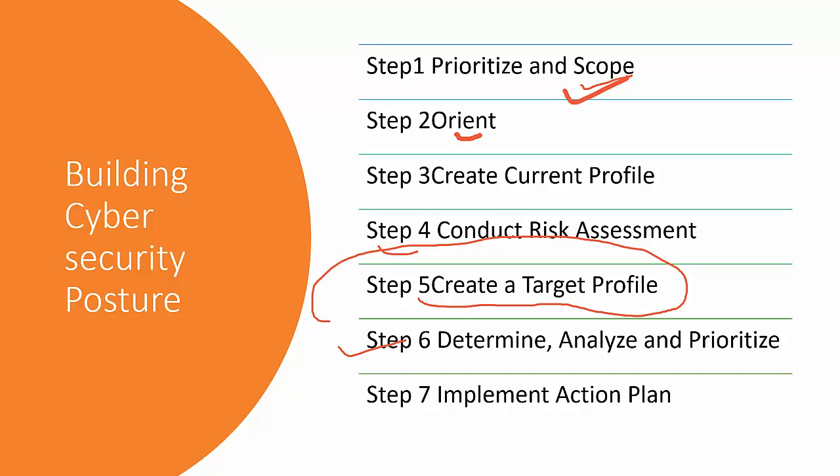Step 7 is about how to get there — implementing the action plan. After gaps are identified and prioritized, the required actions are taken to close them and work toward the target state. The action plan may be gradually implemented, building on the momentum of project success to build credibility. Executing the action plan also provides the opportunity to foster an effective risk management culture throughout the organization.